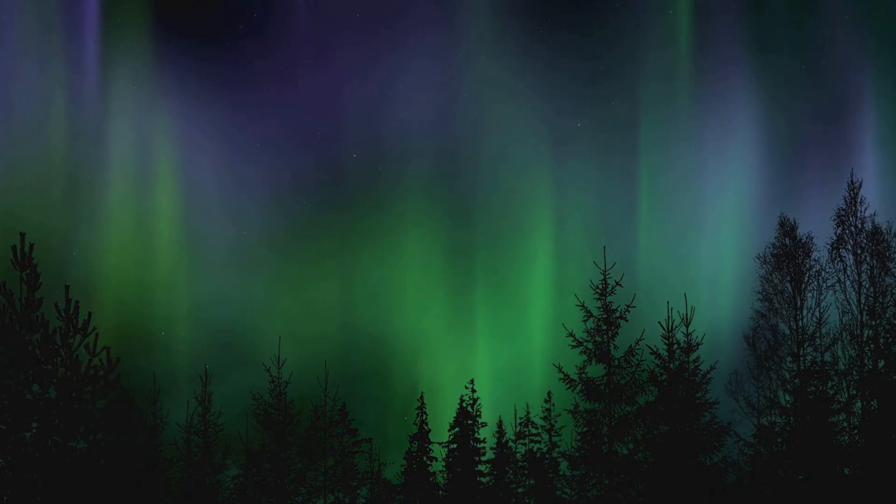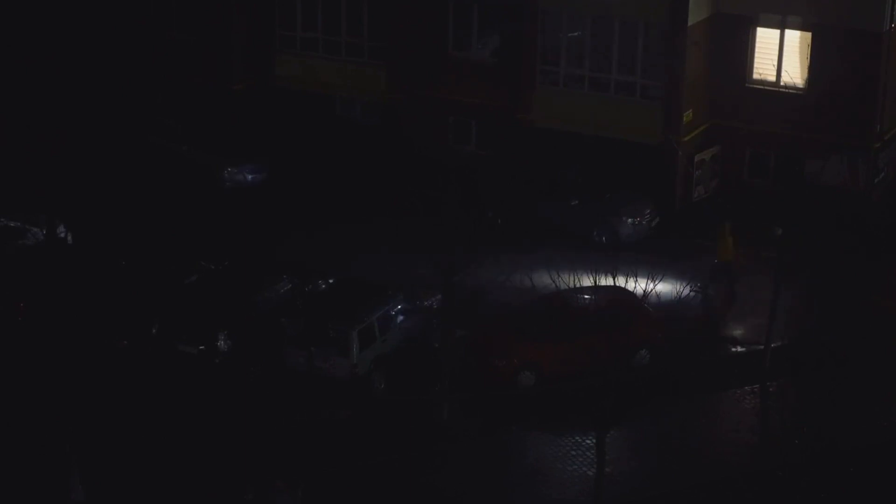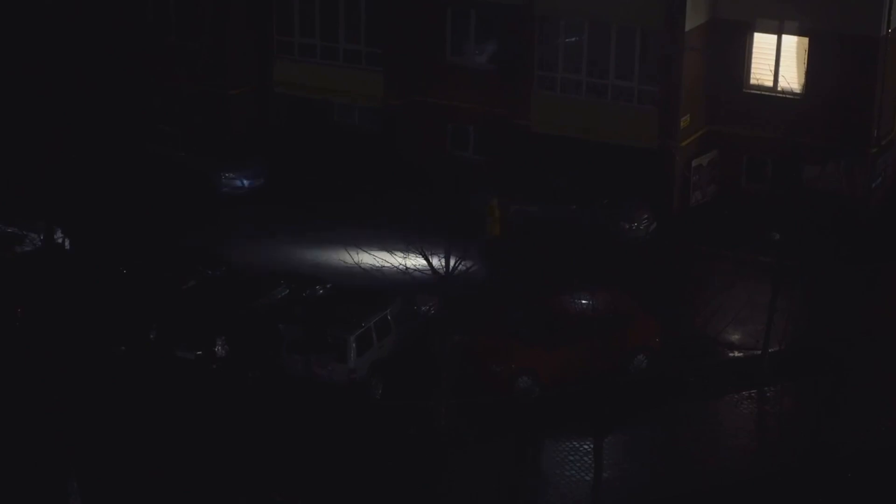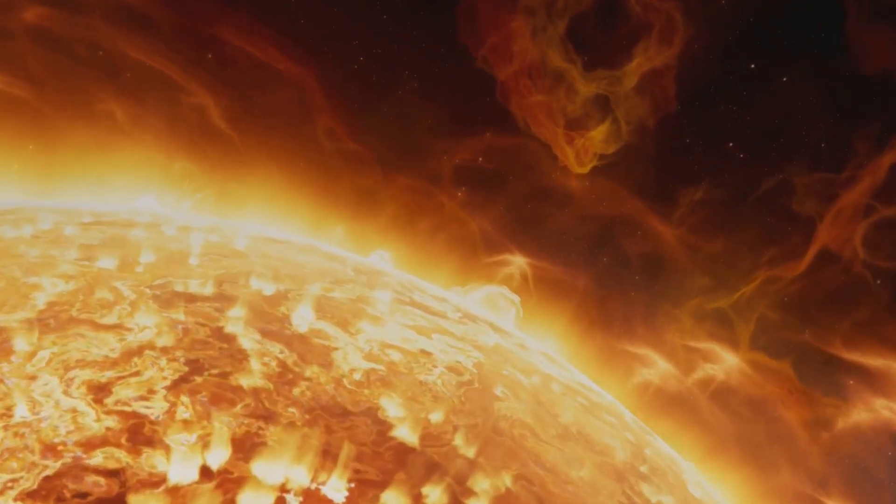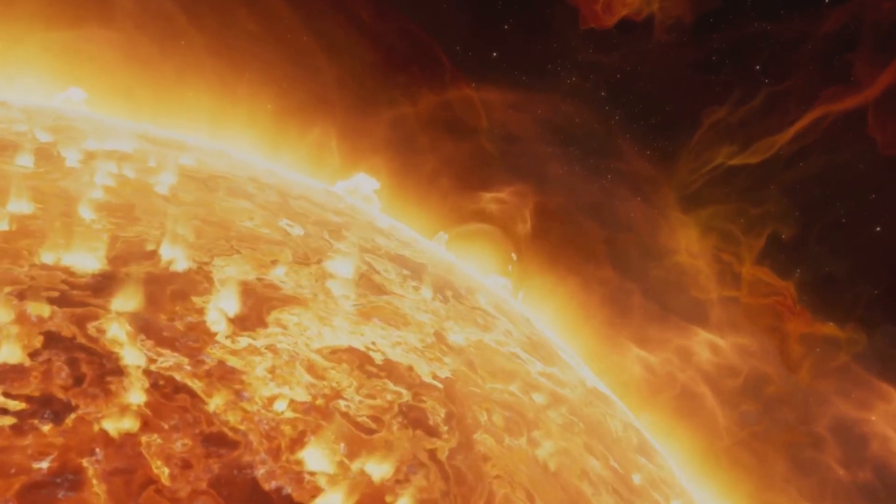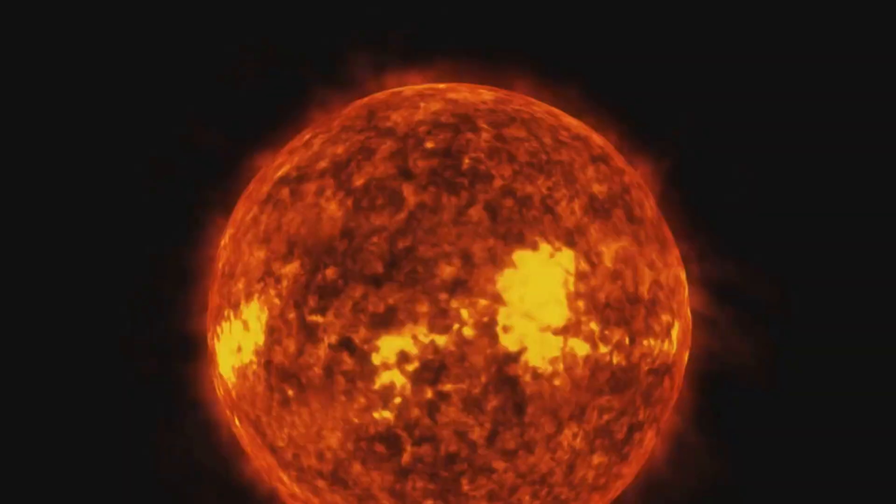But this celestial spectacle was not without its repercussions. The storm disrupted our power grids, causing intermittent blackouts and plunging cities into darkness. GPS systems, which we heavily rely on for navigation, started to falter, leaving many disoriented. Radio communications, too, were not spared, leading to disrupted broadcasts and hampering emergency services. Daily life as we knew it was affected.